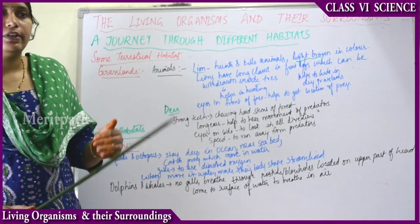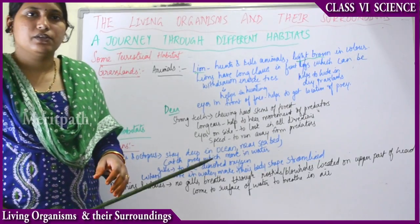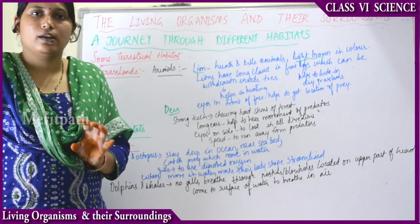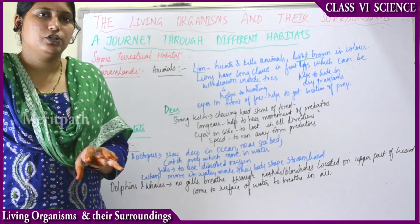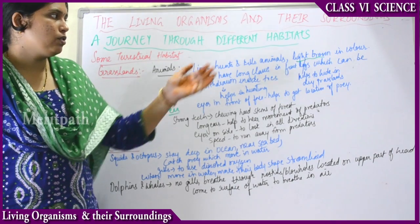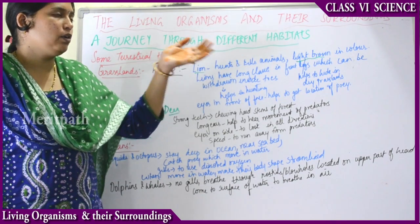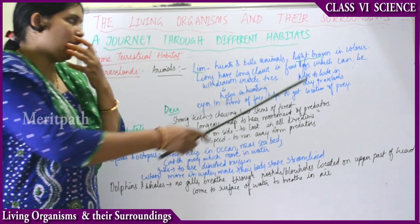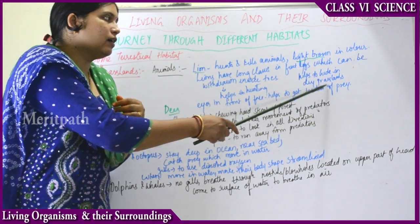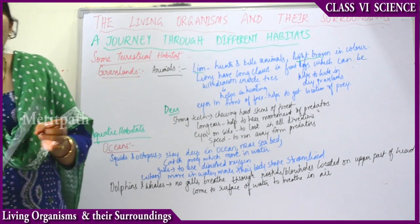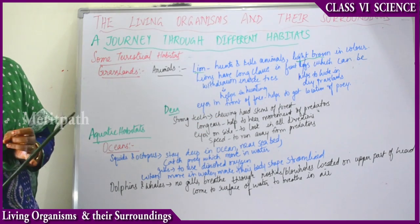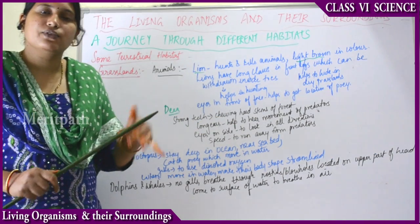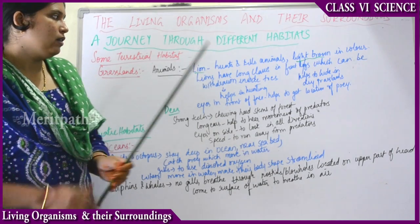When the grassland is dry, the dry grass or hay is brownish in color. So the light brown color of the lion helps it to hide in the dry grasslands. It can hide because its color mixes with the surroundings.